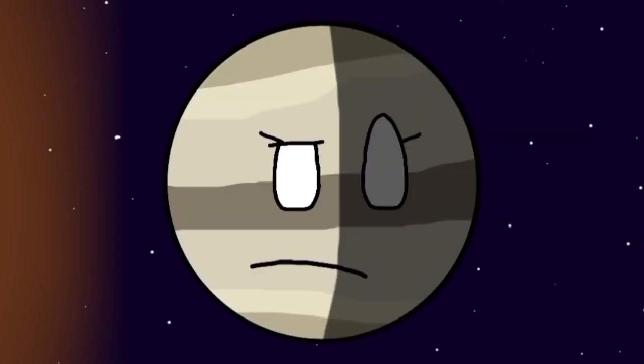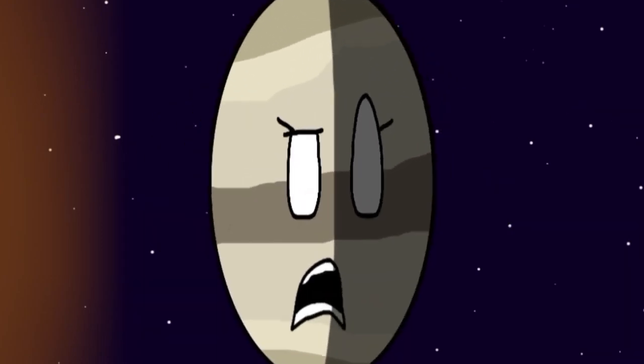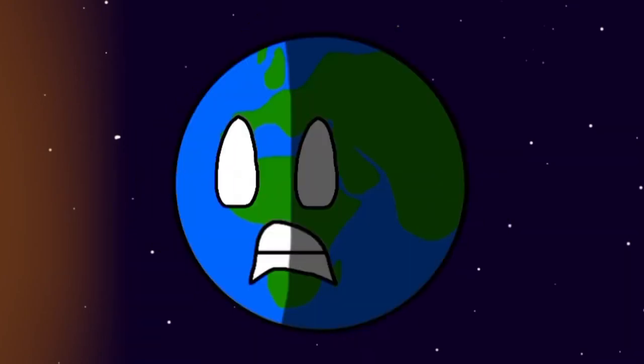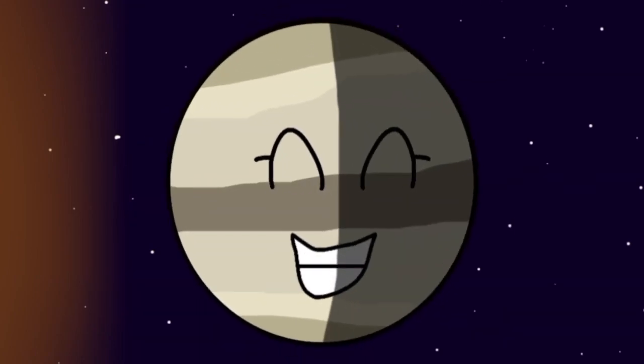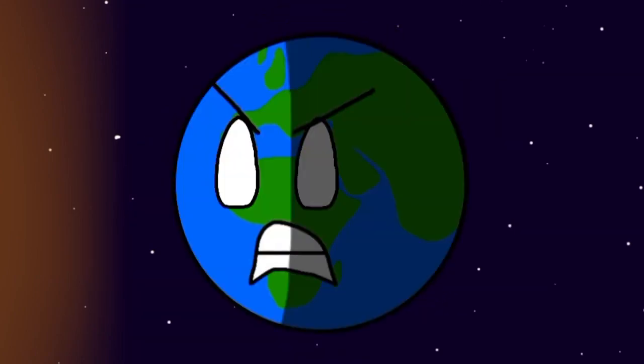Earth suddenly asks, "Wait, where's Moon?" Then adds, "Hmm, I don't know, but that reminds me. Did you know that I now have a moon?" Venus is surprised: "You what?" Earth confirms, "Yeah, I have a moon. Want me to tell you about it?"